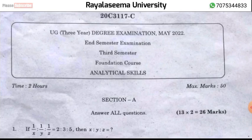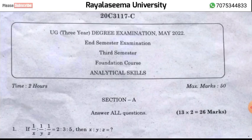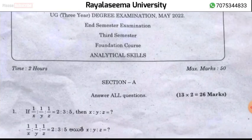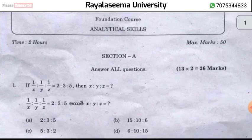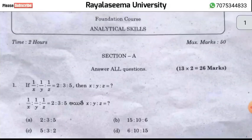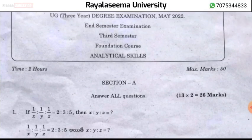There is some confusion about the examination pattern, so let me clarify. We have three examination patterns. First, we have 13 multiple choice questions worth 2 marks each, totaling 26 marks. Then we have 3 questions worth 8 marks each, giving 24 marks. So 24 plus 26 equals 50 marks total.